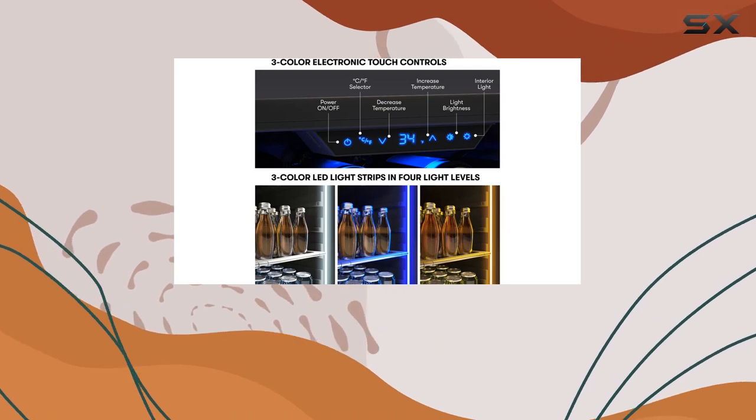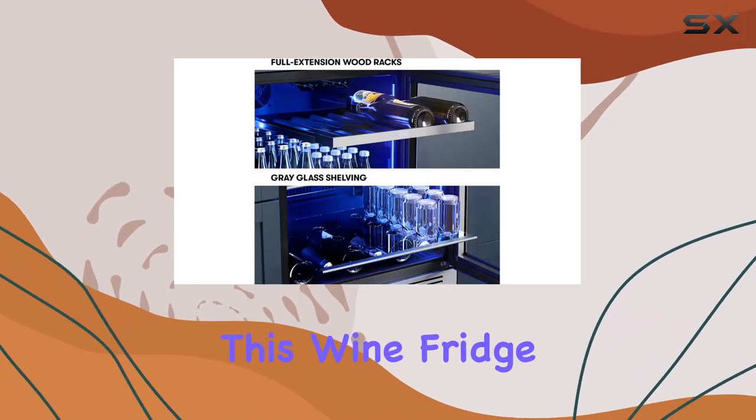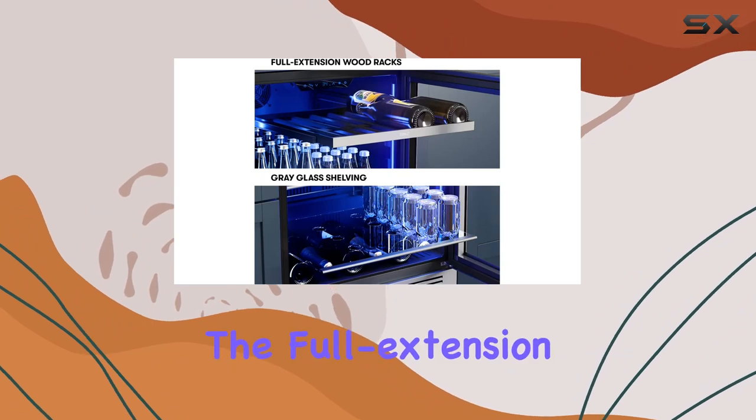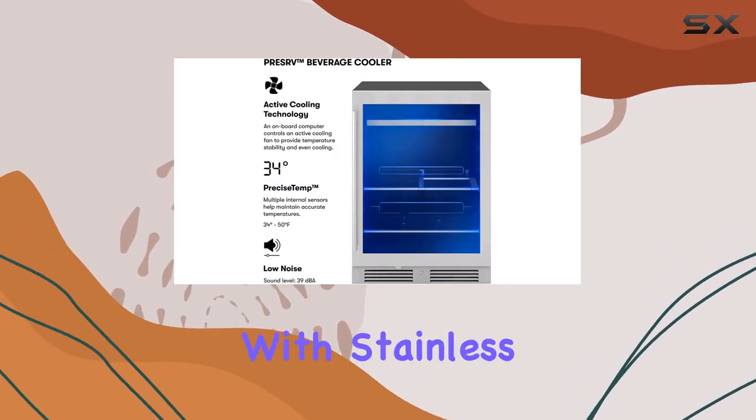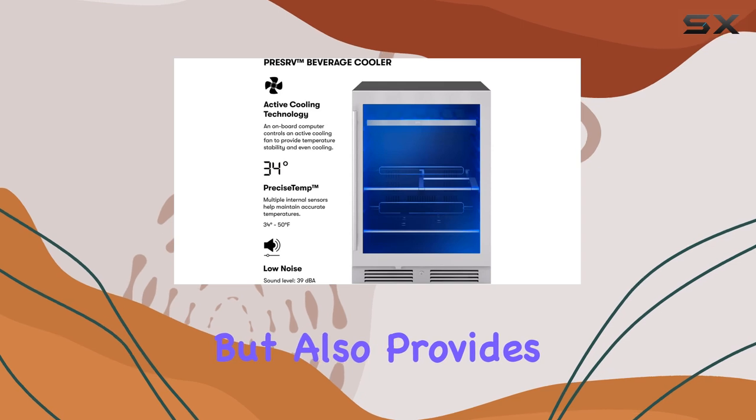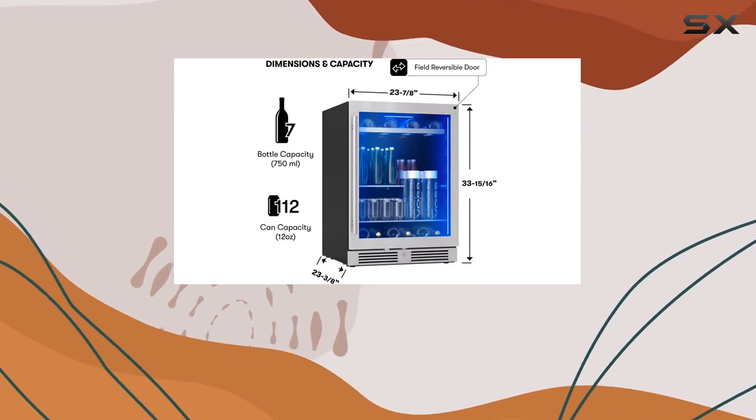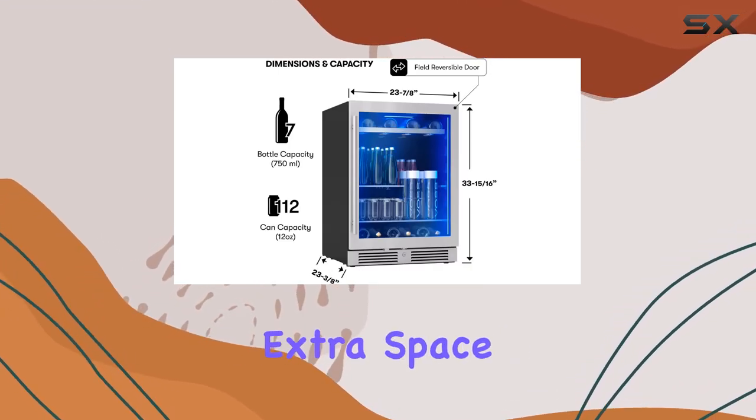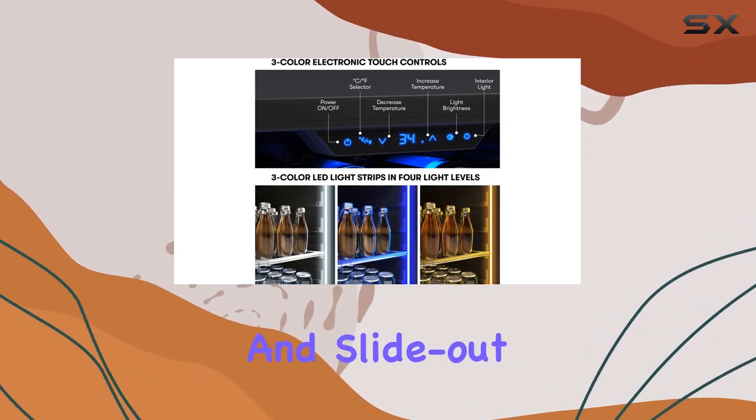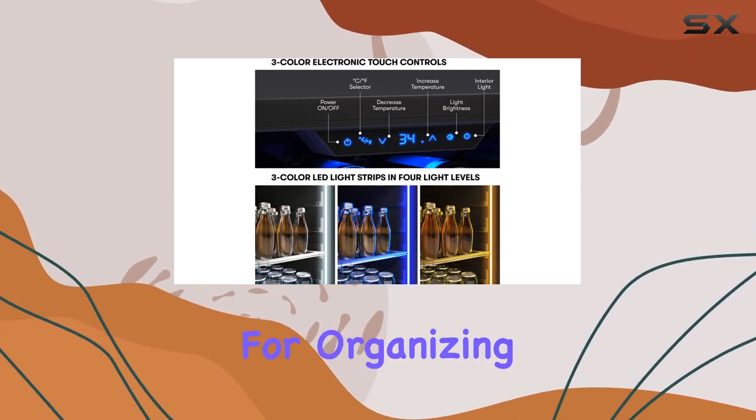When it comes to storage options, this wine fridge offers flexibility. The full extension black wood rack with stainless steel trim not only adds a touch of sophistication but also provides easy access to your favorite bottles. And if you need extra space, the optional glass shelf and slide-out gray glass shelves come in handy for organizing your cans or bottles.